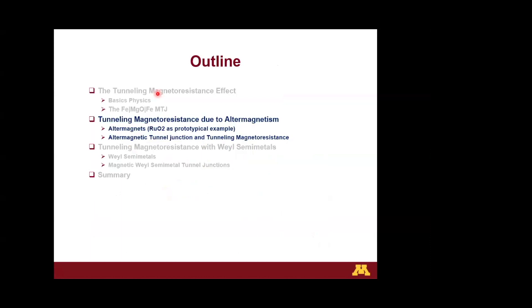That remarkable achievement defines the conventional approach to the TMR effect — finding materials that couple to specific barrier states to optimize the effect. Now I'd like to switch to modern approaches to the TMR effect. These approaches are based primarily on the contacts rather than the barrier, utilizing novel magnetic properties of emerging material systems. The first modern approach is due to altermagnetism, a new kind of antiferromagnetism proposed a few years ago.